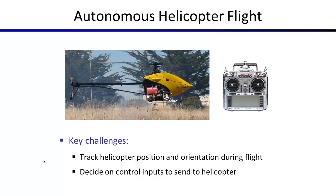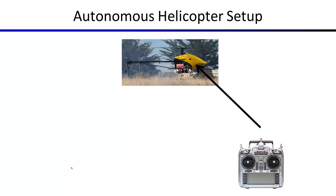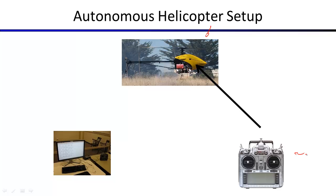How do you do autonomous helicopter flight? There are a couple of challenges. First, you need to track the helicopter — if you don't know where it is or its orientation, it's really hard to control it. Second, once you know where it is and what the target is, what controls do you send to get closer to that target? The probabilistic reasoning part handles tracking with imperfect information, and the decision-making part handles what actions to take under uncertainty.